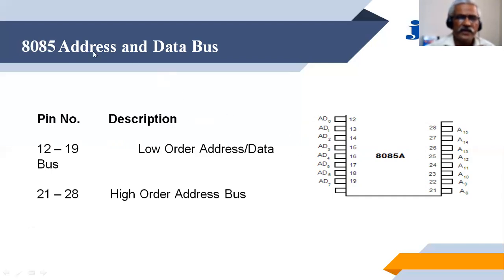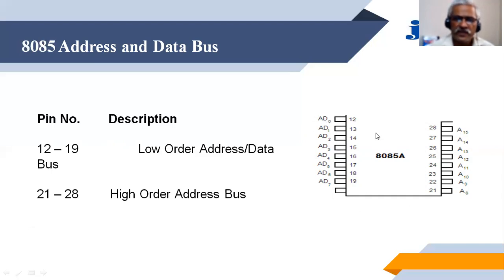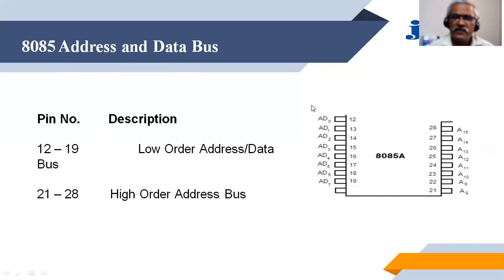In summary, the 8085 has 16 address lines — the low order address A0 to A7 is on pins 12 to 19, and the high order address A8 to A15 is on pins 21 to 28. The same pins 12 to 19 are also used to carry data D0 to D7. The address and data bus are therefore 16 address lines A0 to A15 and 8 data lines D0 to D7, named AD0 to AD7 because they are multiplexed. This duality must be removed in real-world circuits so that address and data are separate.